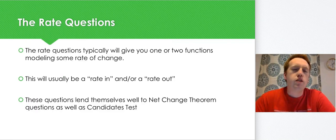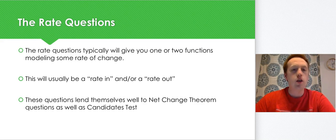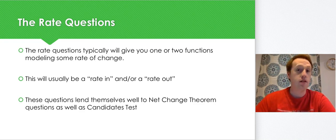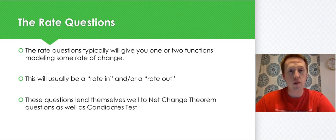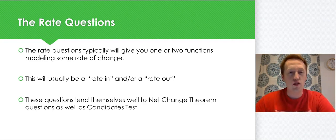The rate question is typically going to give you one function or maybe two functions modeling some sort of rate of change. Usually it's a rate in, rate out kind of thing — maybe you're adding something, that's your rate in, and you're taking away or processing something, so it's going away — that's your rate out of the system. These questions lend themselves really well to net change theorem, where we do an integral plus the initial value, as well as some candidates test questions.